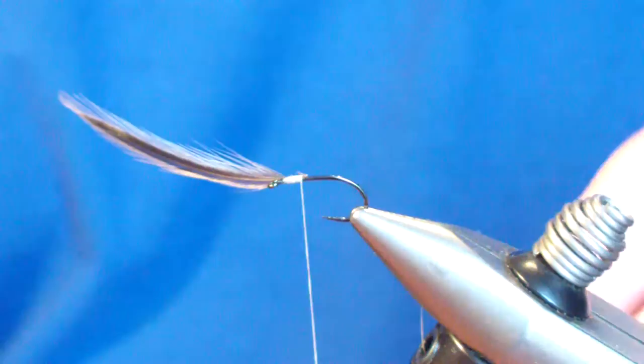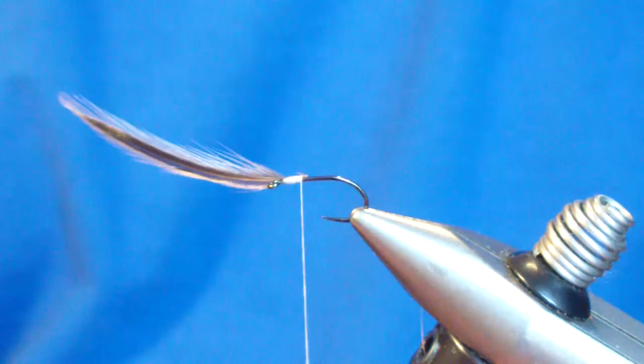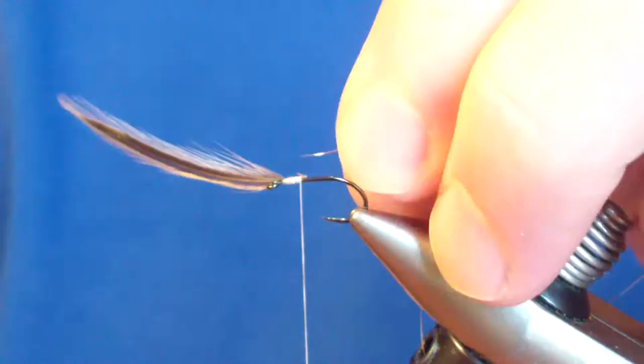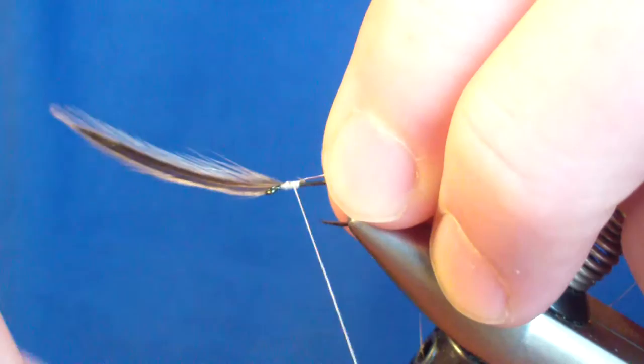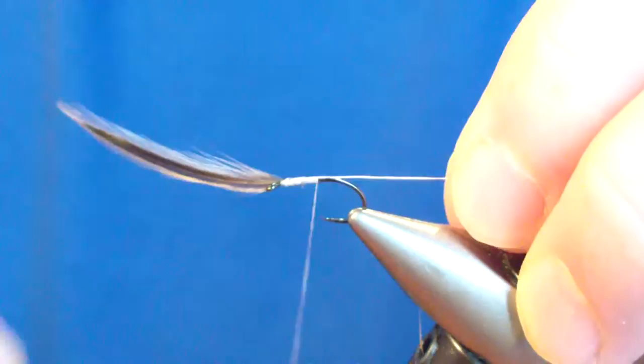And then bring our thread back. Right behind that hackle, after we tie it in, we are going to tie in our rib. Very few moving parts in this fly, very easy to tie, very straightforward. We're going to use fine copper uni wire. I'm going to tie that in right at the same point as the hackle and wrap that in the side of the hook.